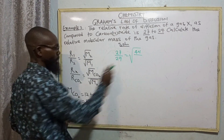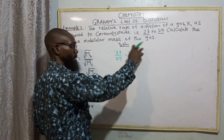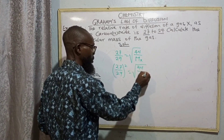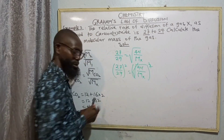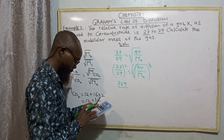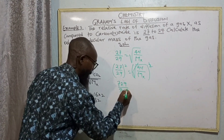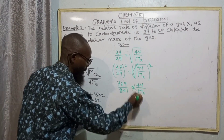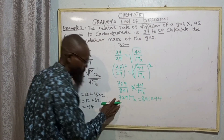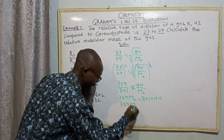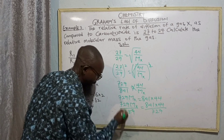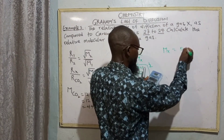Applying the formula: 27 over 29 equals square root of 44 over MX. To remove the square roots, we square both sides: (27/29)² equals 44/MX. So 729 divided by 841 equals 44 over MX. Cross multiplying: 729 × MX equals 841 × 44. Dividing both sides by 729, MX equals 841 times 44 divided by 729, giving approximately 50.8.